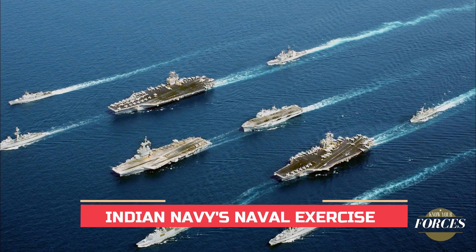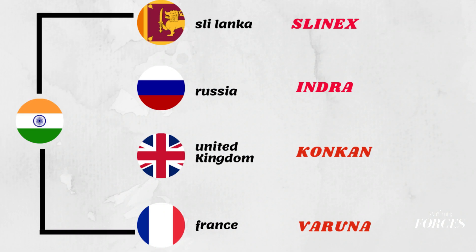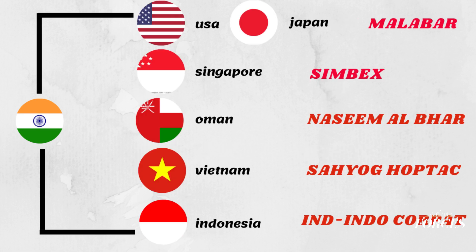Now we will see naval exercises conducted by the Indian Navy. SLINEX is between India and Sri Lanka. Indra is between India and Russia. Konkan exercise is between India and the United Kingdom, conducted in the Arabian Sea at the Konkan coast of India. Varuna is between India and France. Malabar is between India, Japan, and the USA.